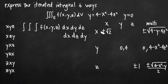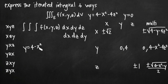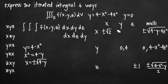Now filling out the remaining table entries: for x in terms of y, I plug in 0 for z into the original equation and get y = 4 - x², then solve for x: x² = 4 - y, so x = ±√(4 - y). Those are my two limits of integration, so I write ±√(4 - y) for x in terms of y.